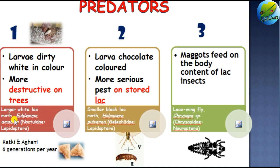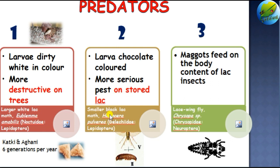The first is the larger white lac moth, scientifically called Eublemma amelis, and the second is the smaller lac moth, scientifically called Holocera pulveria. The larva of the white lac moth is dirty white in color and they complete six generations per year. The most favorable condition for these insects is during the monsoon season; they cause the most damage during the khatki and agoni crops. These pests are most destructive on trees, while the smaller black lac moth is the most serious pest on stored lac. The symptom of attack is pinkish discoloration in the crude lac, as larvae enter through openings in the incrustation and feed on up to 40 to 60 cells.